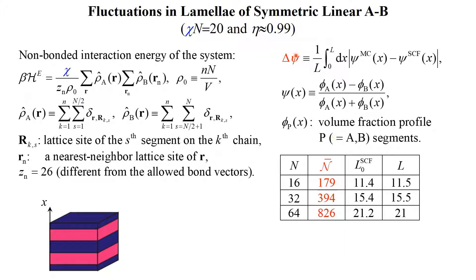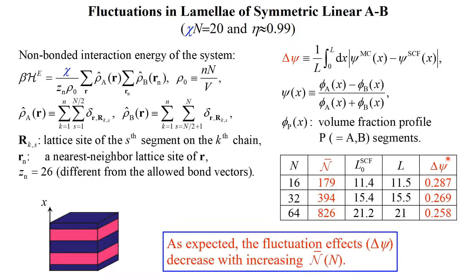We calculate the difference delta-psi in the order parameter profiles between the Monte Carlo result and the self-consistent field prediction at the same n. Since delta-psi is due to the system fluctuations neglected by the self-consistent field theory, we obtain the expected result that the fluctuation effects decrease with increasing n-bar, indicating that our model captures the fluctuation effects.